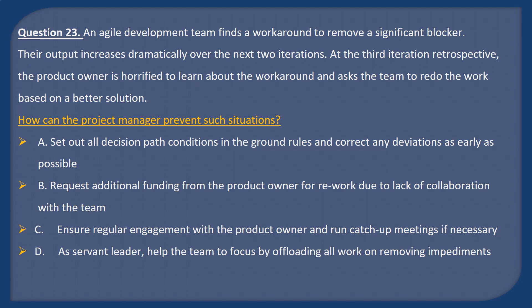Question 23. An Agile development team finds a workaround to remove a significant blocker. Their output increases dramatically over the next two iterations. At the third iteration retrospective, the product owner is horrified to learn about the workaround and asks the team to redo the work based on a better solution. How can the project manager prevent such situations? A: Set out all decision path conditions in the ground rules and correct any deviations as early as possible. B: Request additional funding from the product owner for rework due to lack of collaboration with the team. C: Ensure regular engagement with the product owner and run catch-up meetings if necessary. D: As servant leader, help the team to focus by offloading work or removing impediments.